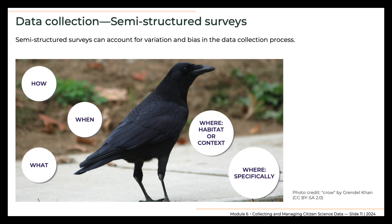The information about observer identity and where and how observations were made allows researchers to statistically account for biases inherent in opportunistic data collection. For example, semi-structured surveys not only show where species are located, but also can be used to infer frequency of species occurrence and changes in abundance over time and location. Data from the same participants can be tracked over time, and project designers can contact participants when data discrepancies are noted or other data issues arise. An advantage of semi-structured surveys is that they can be simple enough to appeal to a wide audience while still collecting sufficient information to account for variation and bias in the data collection process.